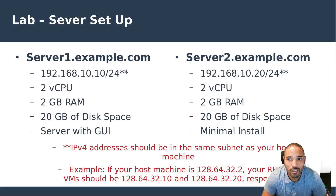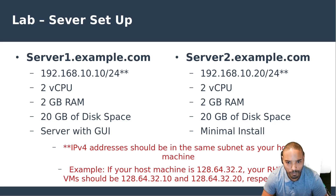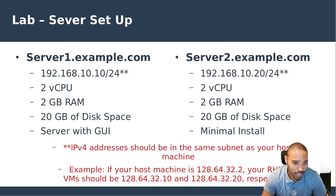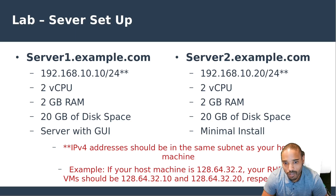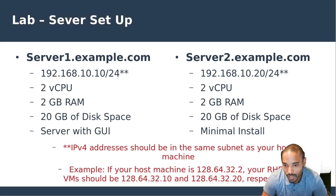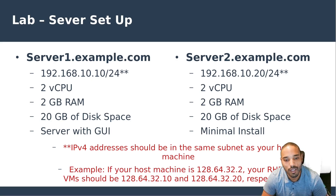This is what the lab setup is going to look like — you're going to have a server one and server two. The IPv4 addresses should be in the same subnet as your host machine. For example, if your host machine is 192.168.x.x, they should be in the same subnet.